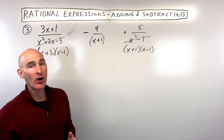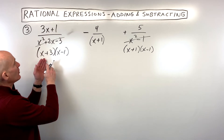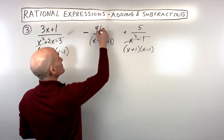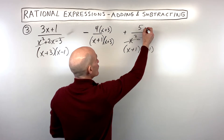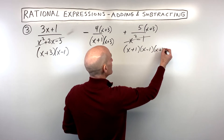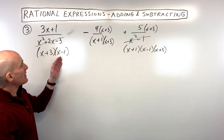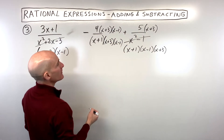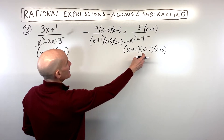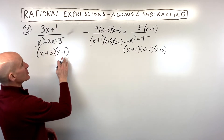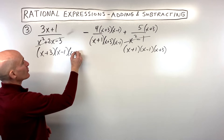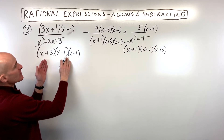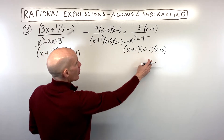Now we have to look and see what we need to do to get all these fractions to have the same denominator. It looks like I have an x plus 3 here, but not here or here. So let's multiply this fraction by x plus 3 in the numerator and the denominator, and same thing over here — x plus 3 to the numerator and denominator. We've got an x minus 1 here but not here, so we need to multiply the numerator and denominator by x minus 1. We've got an x plus 1, but this one over here doesn't have an x plus 1, so let's multiply the top and bottom here by x plus 1. Now we've got x plus 3, x minus 1, x plus 1 for all the fractions — we have a common denominator.